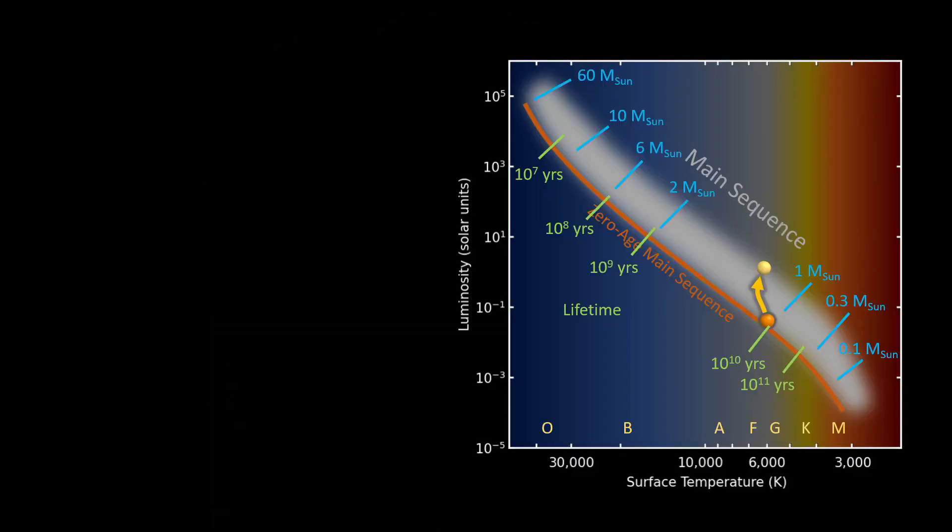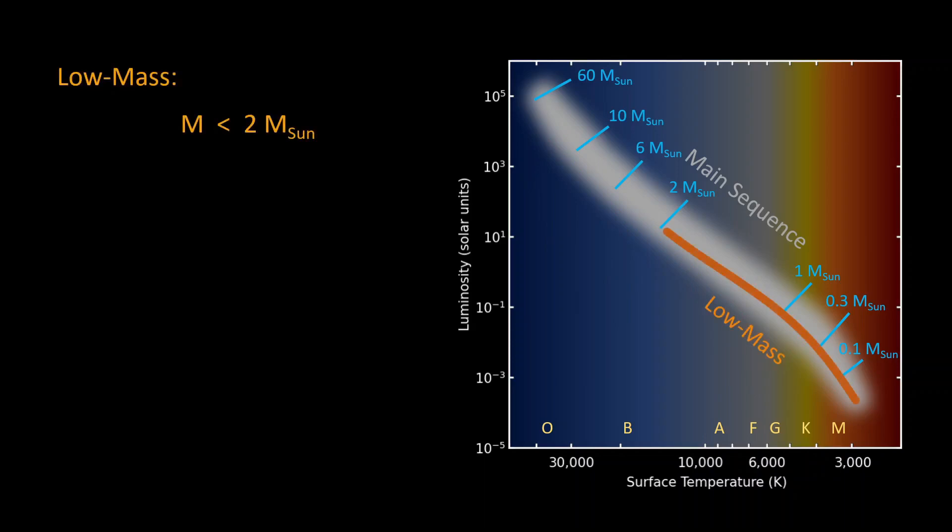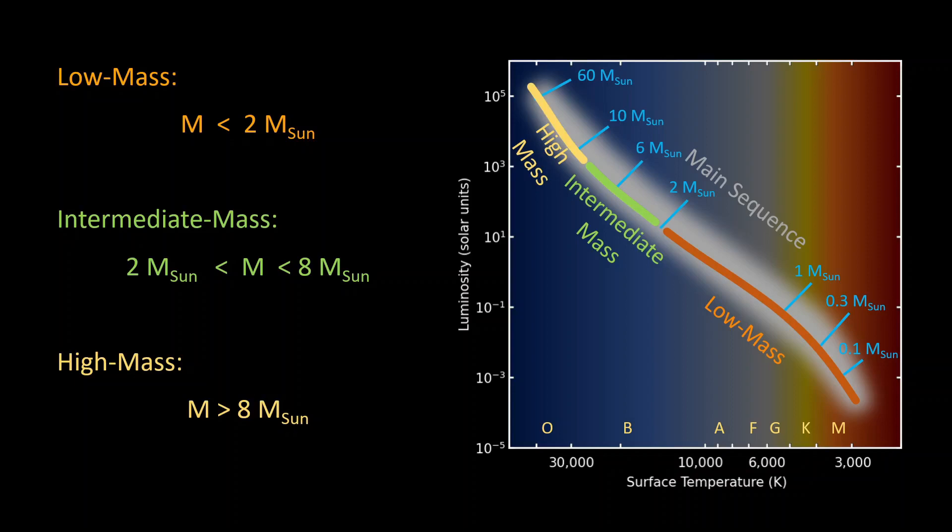From this point in the life of stars, the future evolution depends on their mass. We will separate stars in three groups: low mass stars, stars born with less than 2 solar masses; intermediate stars, which are stars born with masses between 2 and 8 solar masses; and high mass stars, stars born with masses greater than 8 solar masses.